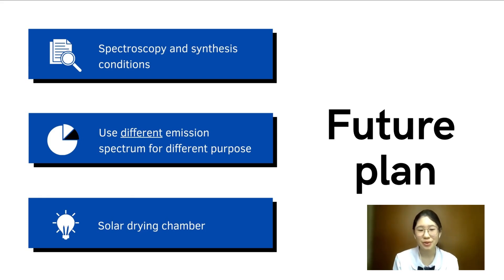For example, the red emission graphene quantum dots can be formed into a roof to use as a heat source for a solar drying chamber.